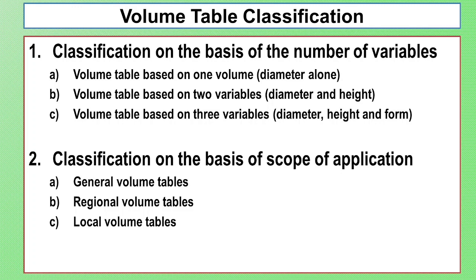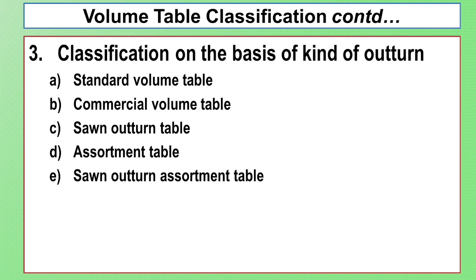Classification on the basis of scope of application includes the standard volume table, commercial volume table, sown-outturn table, assortment table, and sown-outturn assortment table. This is the volume table classification.